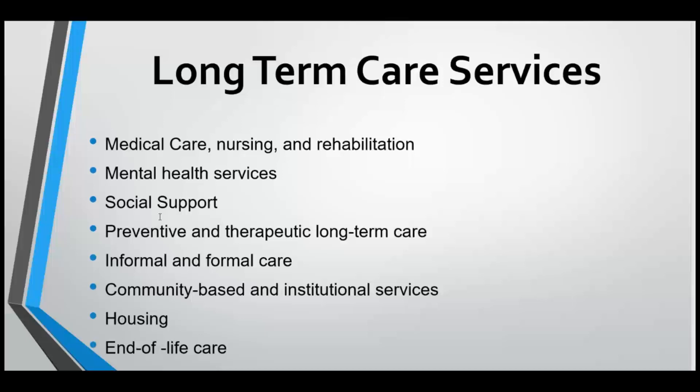Most long-term care is unpaid, usually delivered by family and friends — this is informal care. Men, minorities, married individuals, and those with less education are more likely to receive informal care. A key issue is a shrinking pool of informal caregivers, as the numbers of divorced and unmarried elderly are rising. Respite care provides temporary relief to informal caregivers and is the most frequently suggested intervention to address caregiver stress and burden. Services can include adult day care, home health care, or temporary institutionalization.